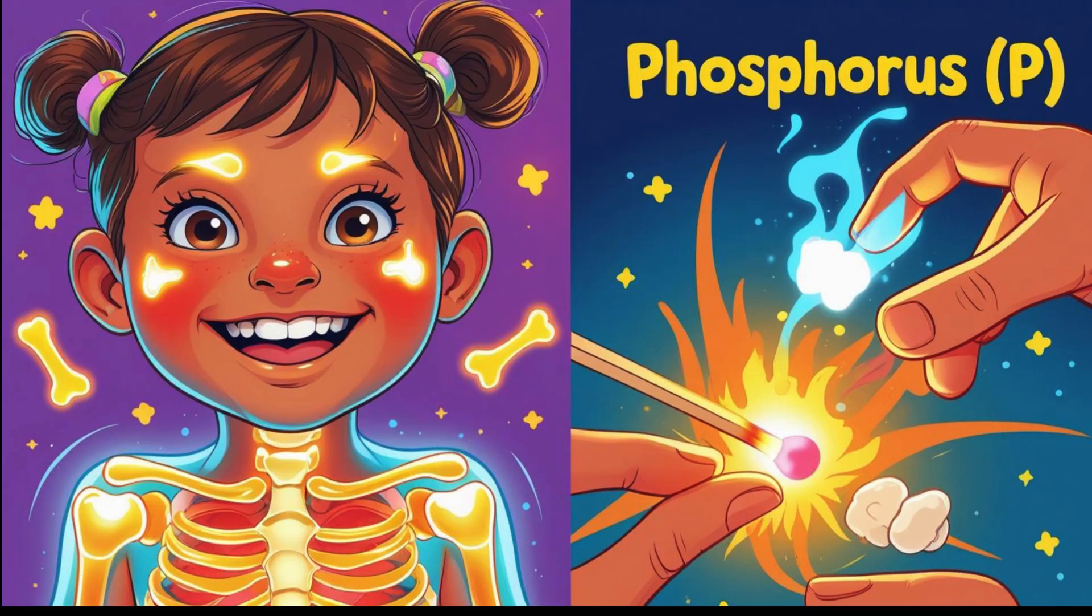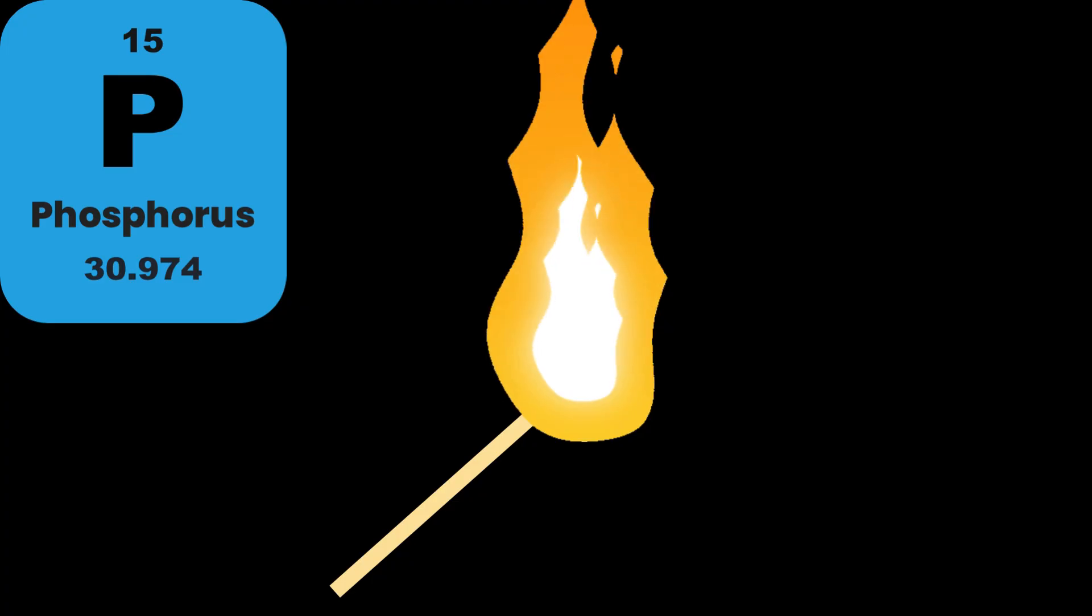Fifteen. Phosphorus. Phosphorus is found in our bones and teeth. It's also used in safety matches, so when you strike a match, phosphorus helps it light up.